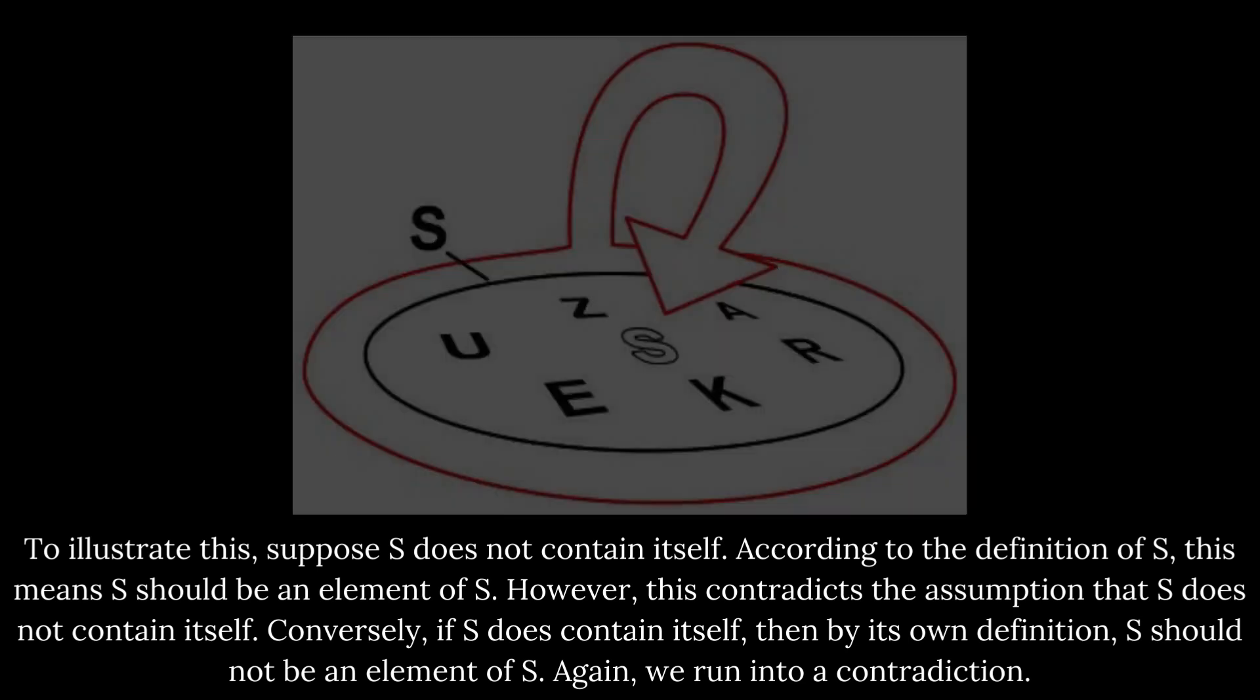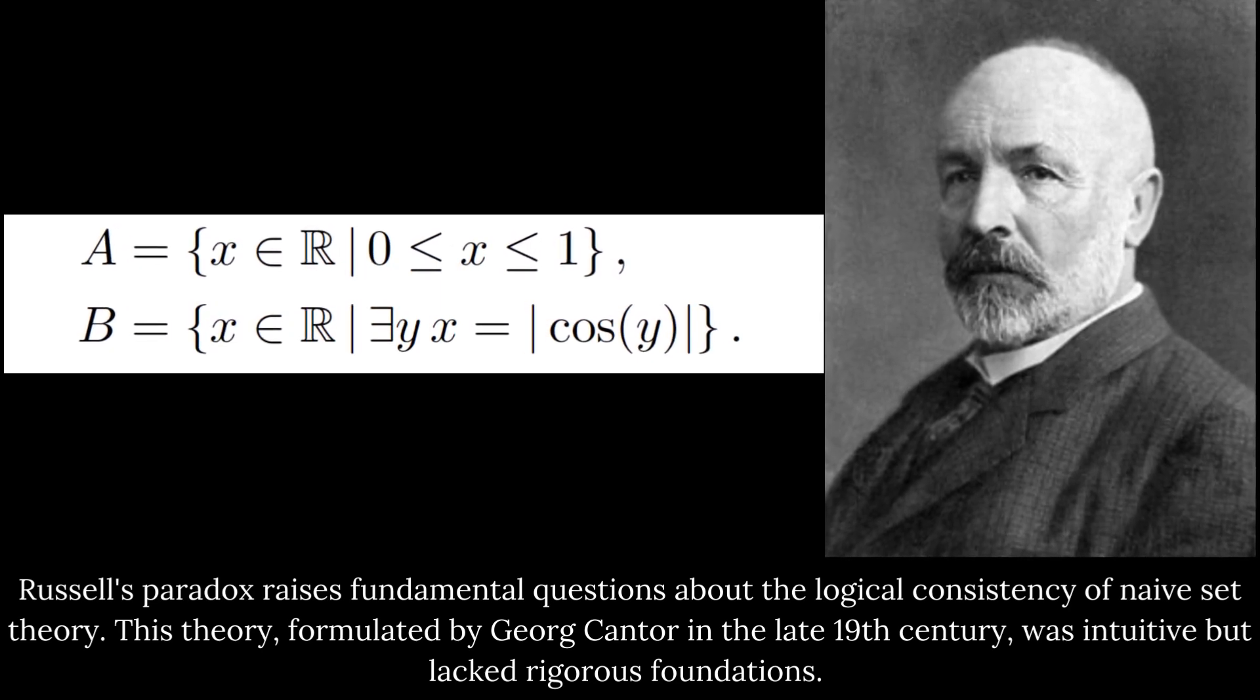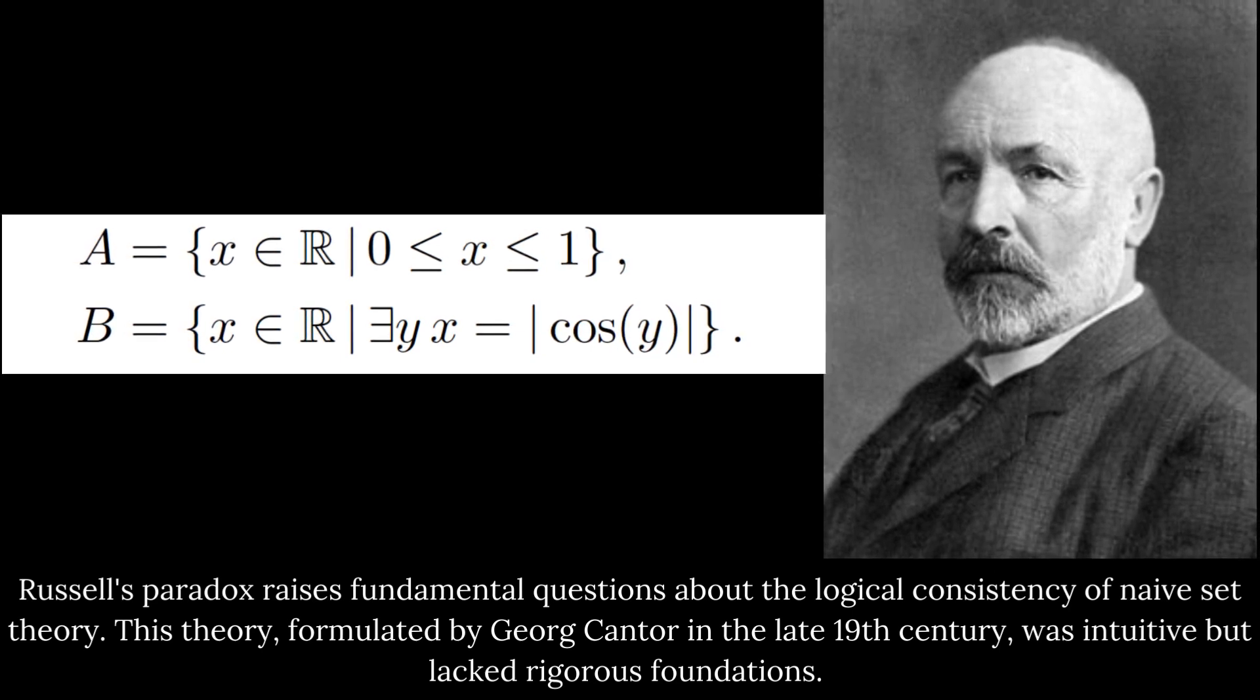In conclusion, Russell's paradox raises fundamental questions about the logical consistency of naive set theory. This theory, formulated by George Cantor in the late 19th century, was intuitive but lacked rigorous foundations.